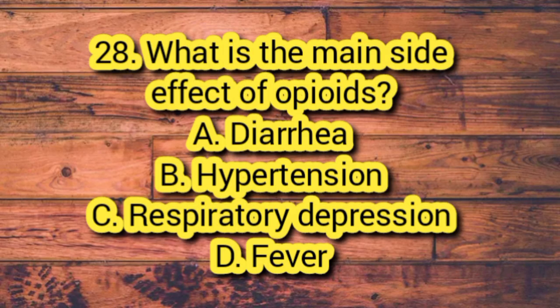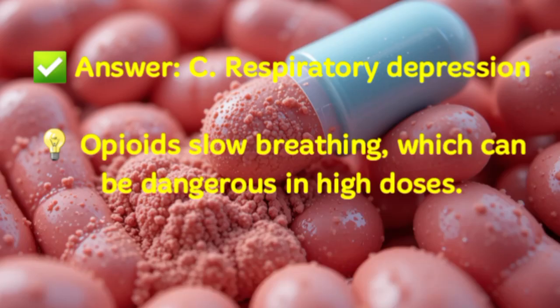Question 28. What is the main side effect of opioids? A. Diarrhea. B. Hypertension. C. Respiratory depression. D. Fever. Answer: C. Respiratory depression. Opioids slow breathing, which can be dangerous in high doses.